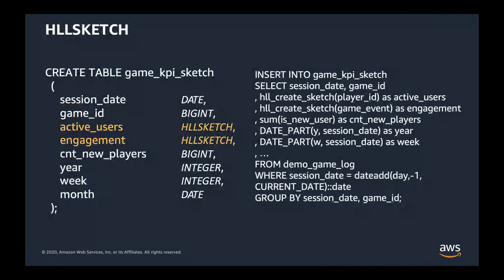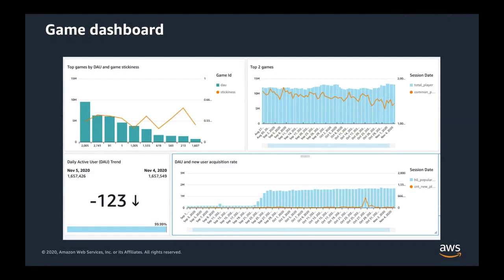When new data arrives, you just need to compute HLLSketch for the newly arrived data. Not only does this reduce the overall computation, it is also lossless — the accuracy and error rate stay the same. With the HLLSketch table, we can build a game dashboard to show top game performance easily and efficiently.